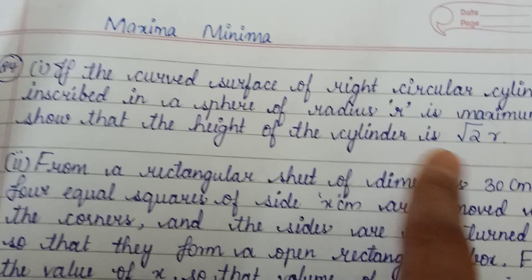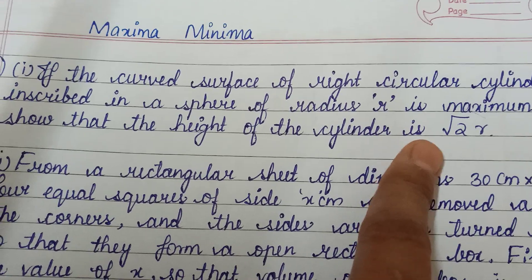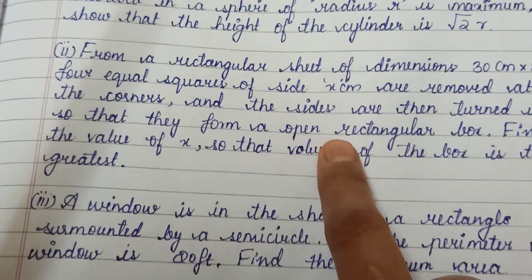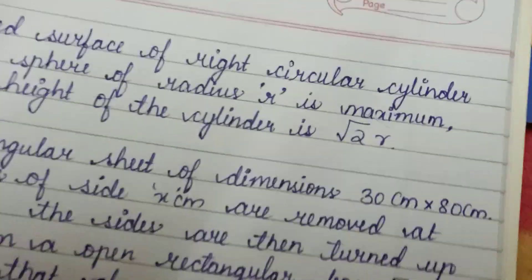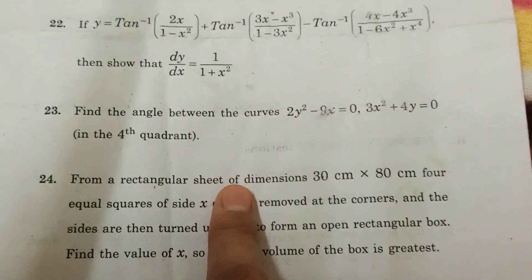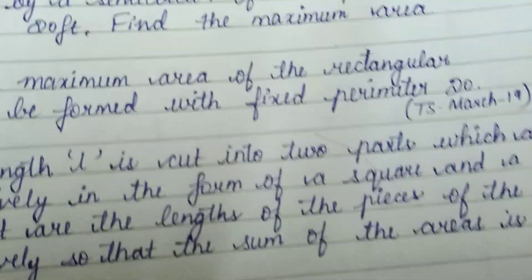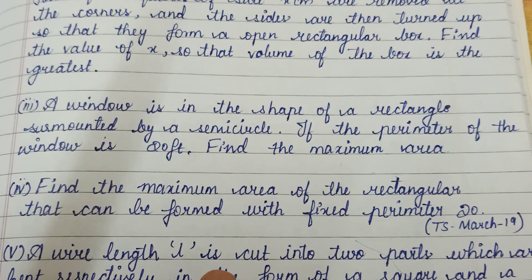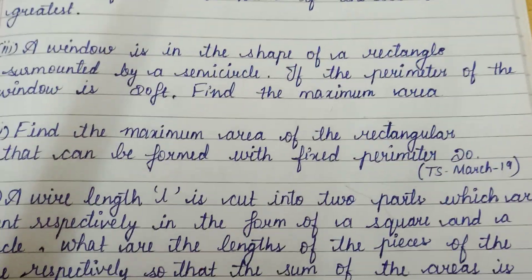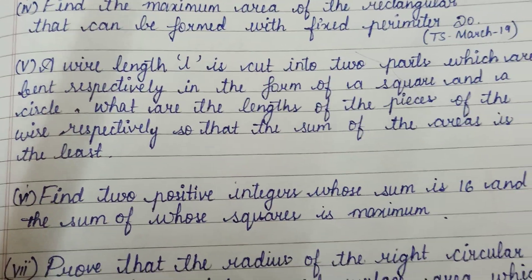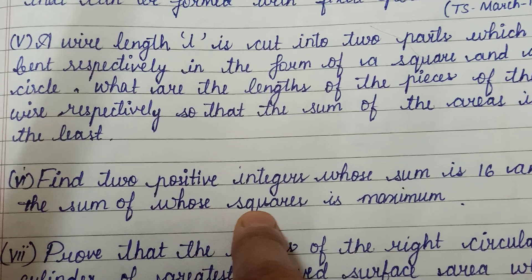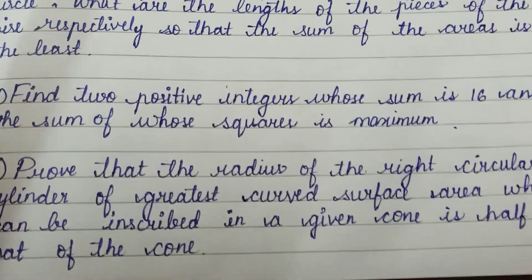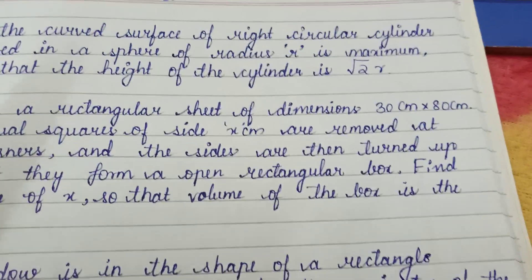The 24th bit — see, root 2R is a very important model. Last year we had root 2R and the maximum. If you want to talk about the right circular cylinder, root 2R — we have to show you. Next, rectangular formula — this is from last year. The maximum area with perimeter 20 — find out. This window problem is important. Maximum area, wire length. Two positive integers whose sum is 16 and whose square is maximum — the sum of squares is maximum. Just 5-6 problems we have to show you.